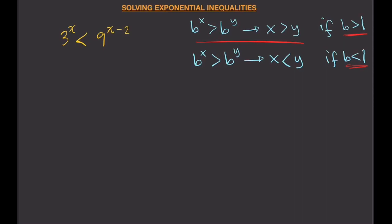Just like with exponential equations, all we need to do is find a way that our bases are equal. We can write 9 as 3 squared, so that gives us 3^x < (3²)^(x−2). Using the power rule for exponents, we multiply the exponents to get 3^x < 3^(2(x−2)).